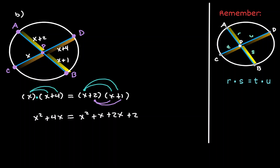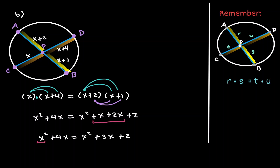Now let's see if we can combine any like terms. On the left-hand side there are no like terms, so let's bring it down. On the right-hand side, x plus 2x gives us 3x. Notice that on the left-hand side we have x squared, and on the right-hand side we also have x squared, so they cancel each other. Now let's move every term with variables to the left-hand side by subtracting 3x.